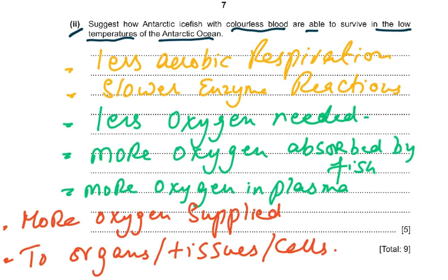To summarize the answer: less aerobic respiration due to lower enzyme reaction rates, so less oxygen is needed; more oxygen absorbed because more dissolves in colder water; more oxygen carried in plasma; and more oxygen supplied to organs, tissues, and cells. There are seven mark scheme points but you only need five, so write more than enough to compensate for any incorrect points.